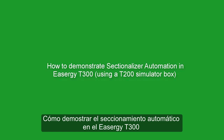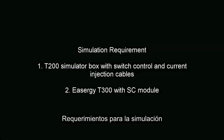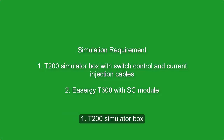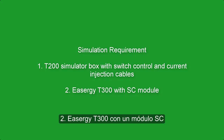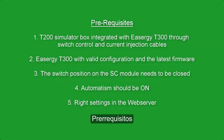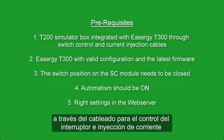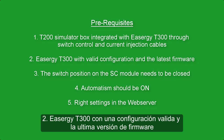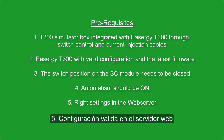How to demonstrate sectionalizer automation in ESERGY T300 using a T200 simulator box. Simulation requirements: T200 simulator box with switch control and current injection cables, and ESERGY T300 with SC module. Prerequisites: T200 simulator box integrated with ESERGY T300 through switch control and current injection cables, ESERGY T300 with valid configuration and the latest firmware. The switch position on the SC module needs to be closed, automatism should be on, and write settings in the web server.